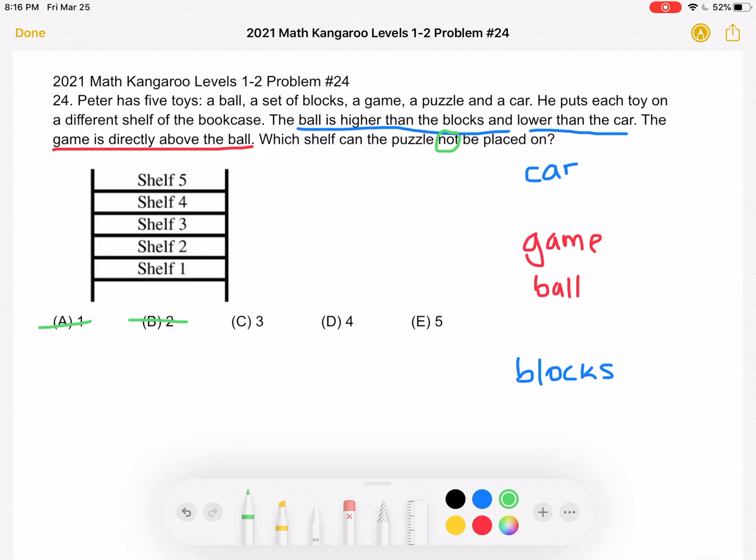However, three would mean that it's in between the ball and the game. And we know that the game is directly above the ball. So this is not okay. So we think our answer is C, but let's just keep going to double check.